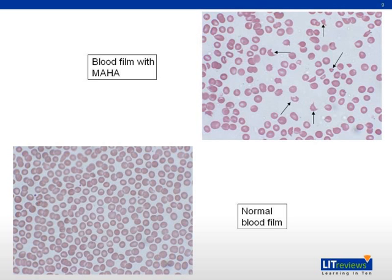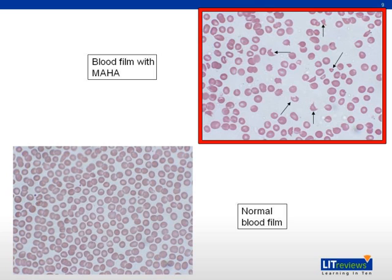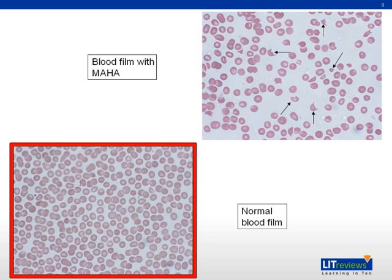This slide shows the typical blood film of patients with microangiopathic hemolytic anemia. These arrows show the classical schistocytes — these cells are fragments of red blood cells due to mechanical damage when the red blood cells pass through microcirculation with microthrombi. Blood films usually have increased young red blood cells or polychromatic cells and thrombocytopenia. In contrast, the slide at the lower left shows a normal blood film with absence of fragmented cells and no thrombocytopenia.